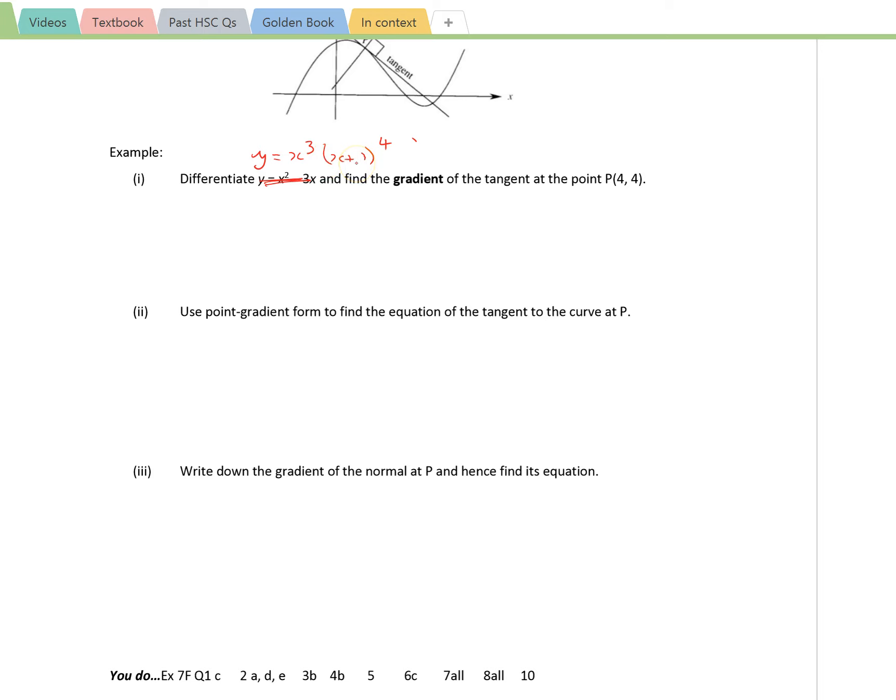So we would say let u is the x cubed and u dash is 3x squared, and v is x plus 1 to the fourth and v dash is 4 times x plus 1 to the power 3, times the derivative of the inside the bracket which is 1, which won't make any change. So we've got our u and u dash, v and v dash defined over here on the side.